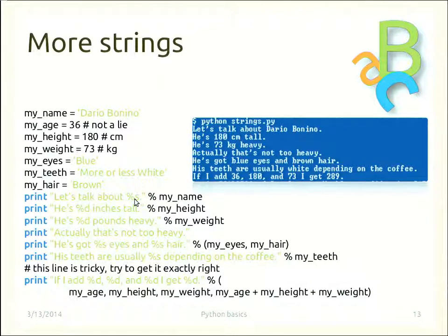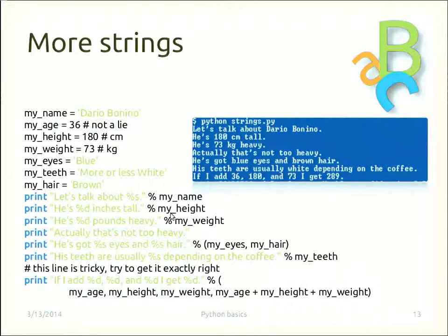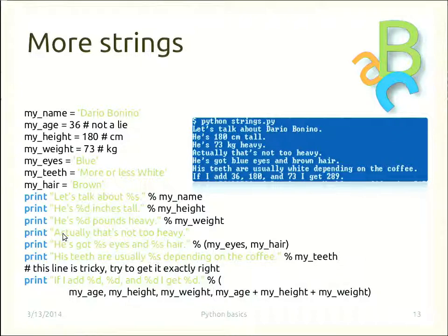The %s placeholder expects a string. The next line uses %d, which stands for integer number — 'He is %d centimeter tall' with the variable my_height gives 'He is 180 centimeter tall'. A similar line handles the weight, followed by a plain text line 'not too heavy'.